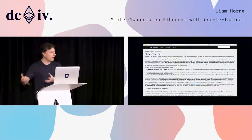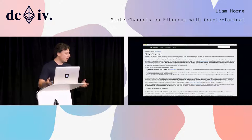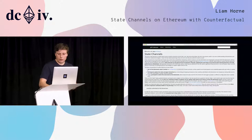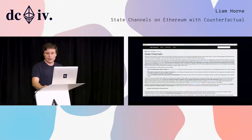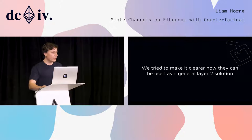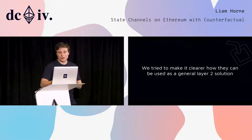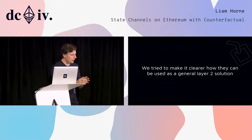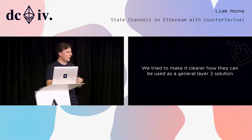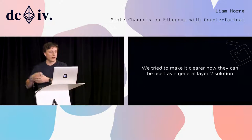A lot of the ideas were there for how you could build state channels into a layer-2 scaling technique, but not a lot of the implementation had been done yet. After lots of thought and research, we basically realized this is an opportunity to try and build something great. So we tackled it with the mindset of: how do you build a layer-2 scalability solution using this technique, generalized enough to allow for arbitrary applications with maximum off-chain interactions, without having to build it as a one-off implementation for your particular application?